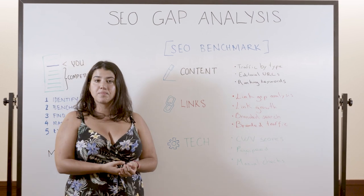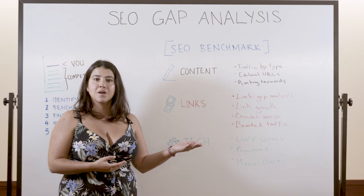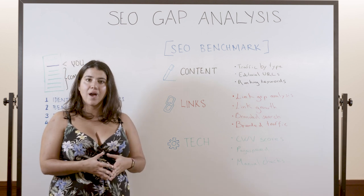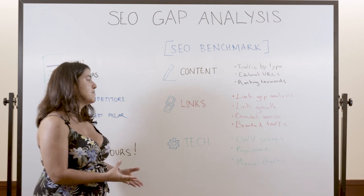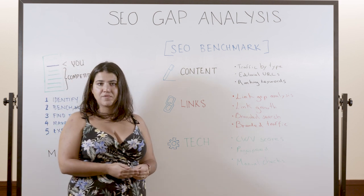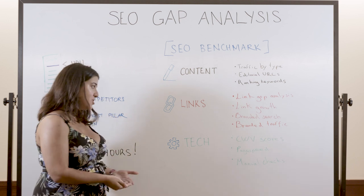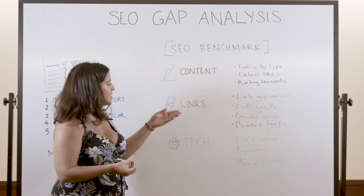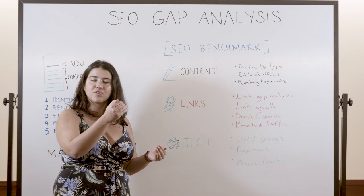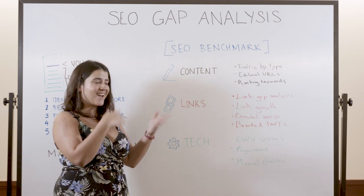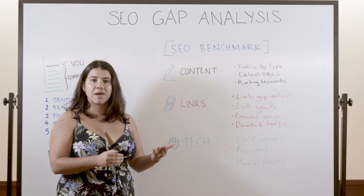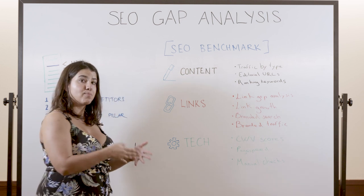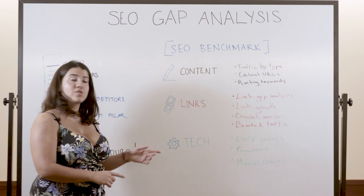Then we're going to be looking at branded search — how many people are looking for your competitors' brands versus how many people are looking for your brand. That's going to indicate the level of brand awareness you have within your target audience in comparison to your competitors. We're going to take it one step further and look at branded traffic as well. There should be a very correlated relation between branded search and branded traffic. If you're first for branded search, you should be first for branded traffic. But if there isn't a correlation, it might be an indicator that you don't have content within your site responding to users' queries about your brand — so that's definitely a very quick win you could action right now.